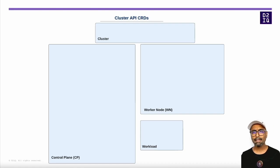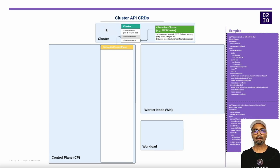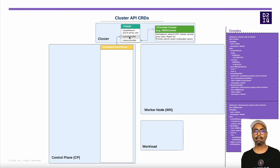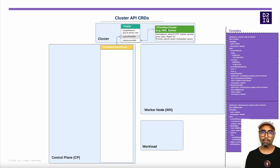CAPI resources can be divided into the categories of cluster, control plane, worker node, and workload. Cluster CRDs define the overall specs and include the cluster and provider cluster resources. The cluster resource defines things like the name of the cluster and the CIDRs for pods and services. It also contains references to the infrastructure spec and a reference to the kubeadm control plane spec respectively.